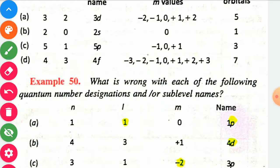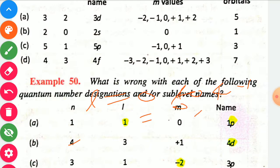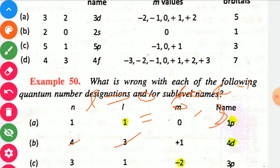Second case: n equal to 4, l equal to 3, m equal to plus 1. For n equal to 4, l can be 0 to 3, so l equal to 3 is correct. For l equal to 3, m can range from minus 3 to plus 3, so m equal to plus 1 is correct. However, the name given is 4d — this is wrong. Since l equal to 3 means f sub-shell, it should be 4f.